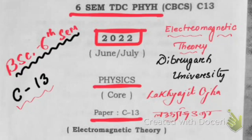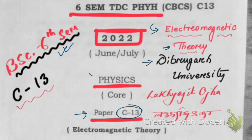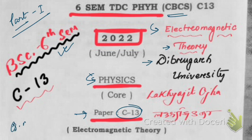Hello friends, in this video we are going to solve the electromagnetic theory question paper — paper C13, Electromagnetic Theory of sixth semester, Dibrugarh University, BSc Physics CBCS. This is part one. In this video we are going to solve question number one and question number two.